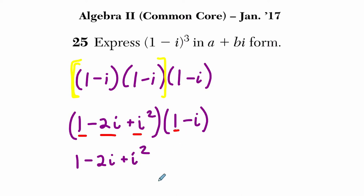And then I have to multiply everything by negative i. So 1 times negative i, negative 2 times negative i, and i squared times negative i. That's going to get me negative i, because negative i times 1 is negative i. Negative i times negative 2i is plus 2i squared. And then negative i times positive i squared is negative i cubed.